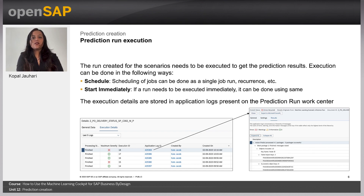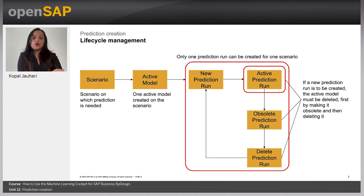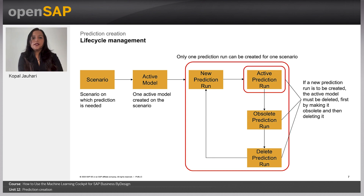If anyone wants to see whether an execution has been started immediately or scheduled later and wants to check the result, that can be seen in the execution details tab. The entire life cycle of a prediction run is: you create a scenario, you release it, you create an active model on top of it. Once an active model is created, you create a run and make it an active run. If you want to delete this run from the UI, there is an action where you set this active run to obsolete and then you can delete it. If you want to edit, you can make it obsolete, make the changes, and then change it back to active.